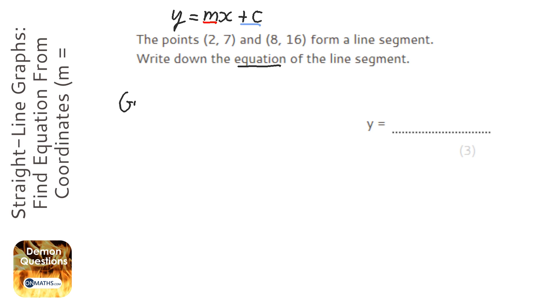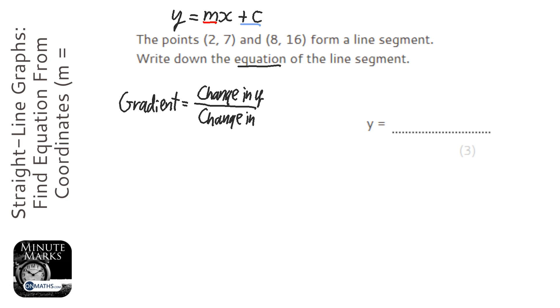And to find the gradient, we just need a simple formula. And the gradient is change in y over change in x. So with this question the y values are these two here. So the second ones in each and our x values are the first two. So the change in y is 16 take away 7. So how much did 7 change onto the second coordinate? And the change in x is 8 take away 2.